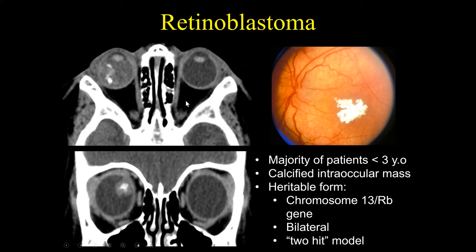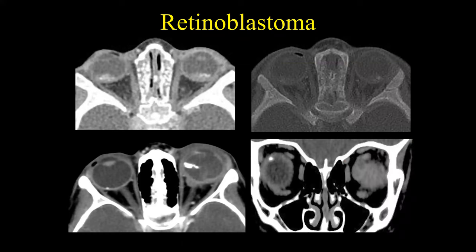If you see a calcified intraocular mass in a child, this is retinoblastoma. Another example: this patient had bilateral retinoblastomas — we can see them on both the soft tissue and bone algorithms, sitting right on the retina, so you lose the red reflex. This patient had a known left retinoblastoma, but if you look carefully there's a small calcification on the right side as well. This patient was too young to have a choroidal angioma, and this actually was a very small retinoblastoma involving the right globe.